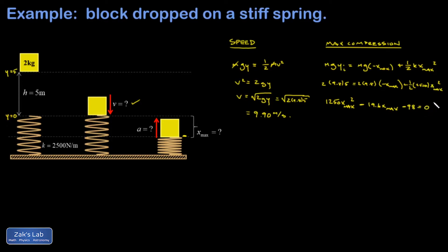1250 x max squared minus 19.6 x max minus 98 equals zero. And at this point, I have to either plug into the quadratic formula manually or use technology to do it. And when I ran this through the quadratic formula, I got one positive answer and one negative answer, and the positive one is the physical one here. And I got x max is equal to 0.288 meters or 28.8 centimeters. So there's that part.